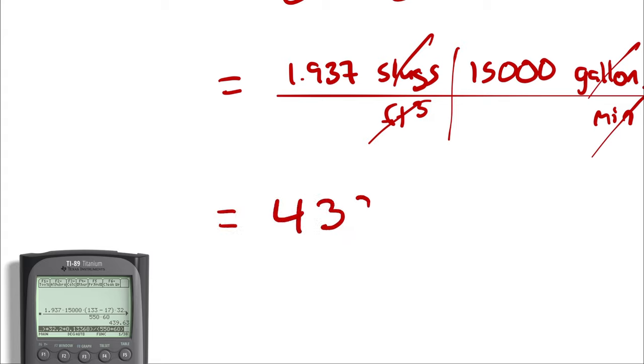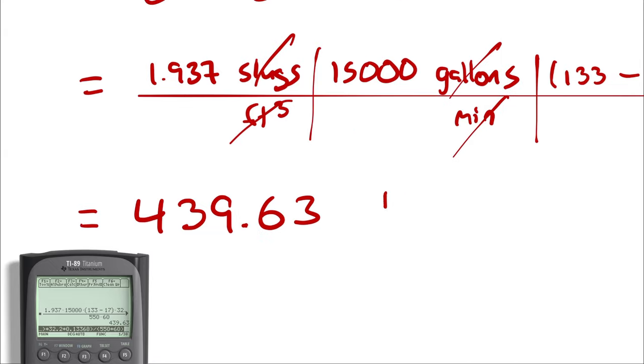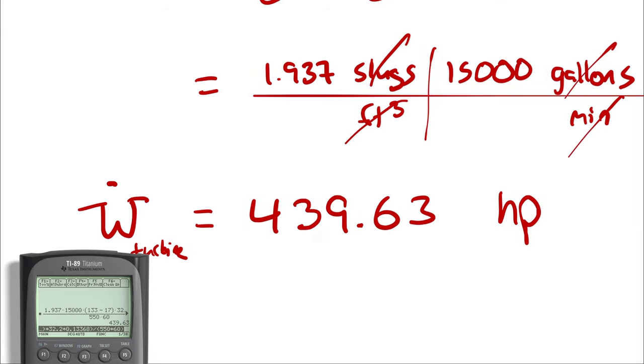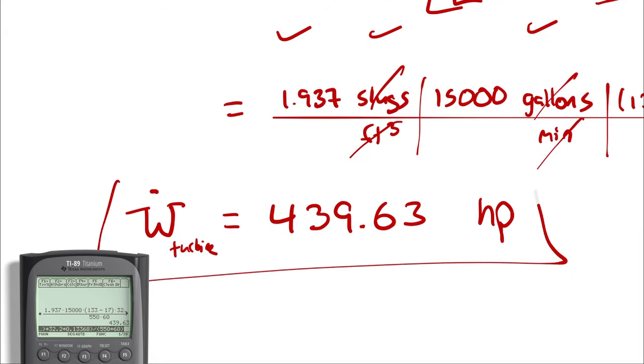439.63 horsepower, and that represents the maximum power that could be generated by the turbine